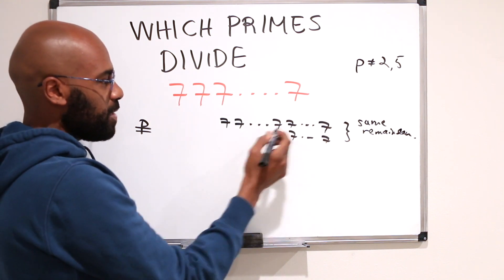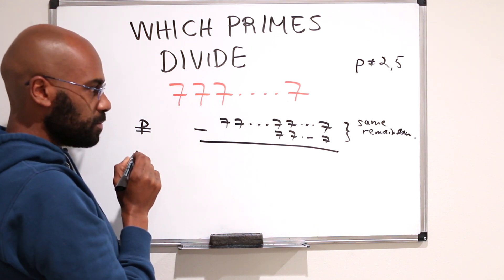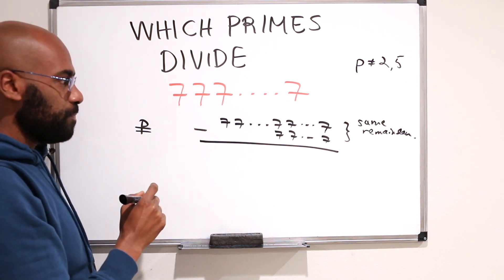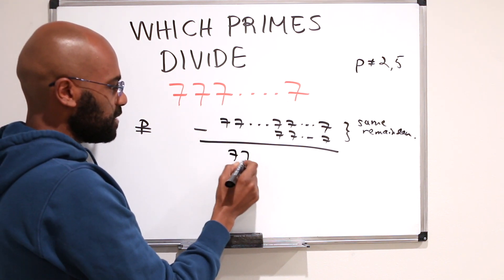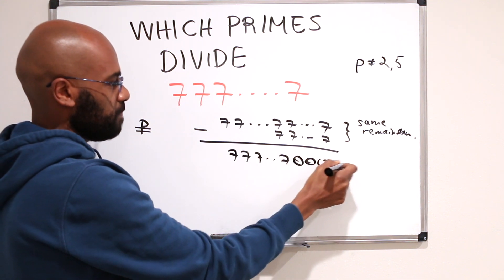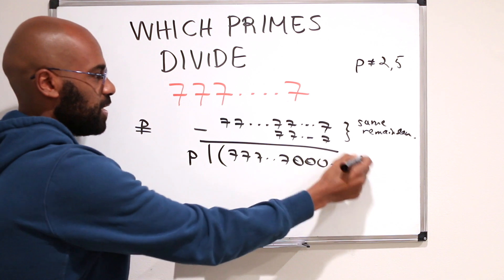Okay, cool. So if they have the same remainder when you divide by p, then it must be the case that when you subtract them, that difference has to be a multiple of p. But when you subtract these, you get something like 7, 7, 7, 7, and then a bunch of 0s. Okay, so p is going to divide some number that looks like this.